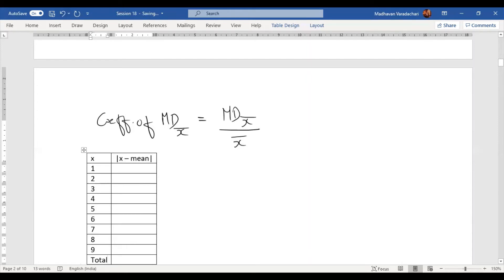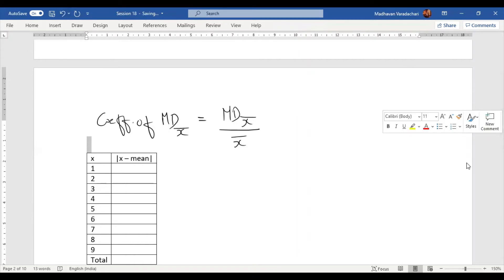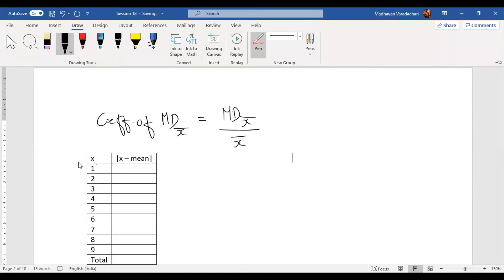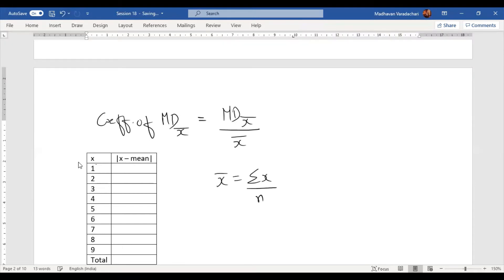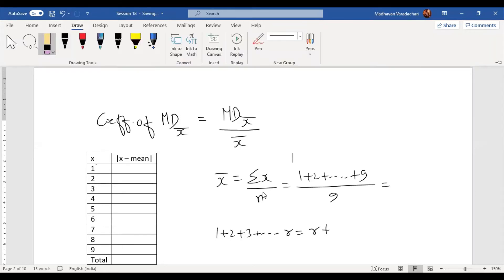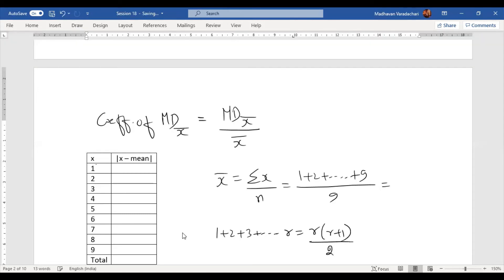x̄ is Σx by n. What do you mean by Σx? It is 1 plus 2 and so on up to 9 divided by 9 observations. I can use that formula: 1 plus 2 plus 3 up to r is nothing but r into r plus 1 by 2. In the numerator we can use that formula, which means it will become 9 into 10 by 2, and already there is a 9 in the denominator. I can cancel these two; this becomes 5. So our mean is 5.